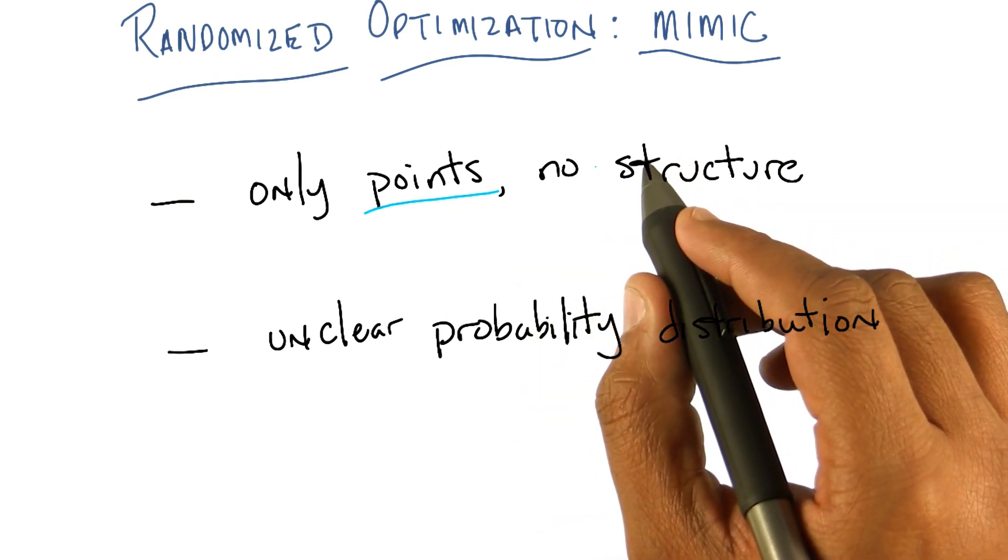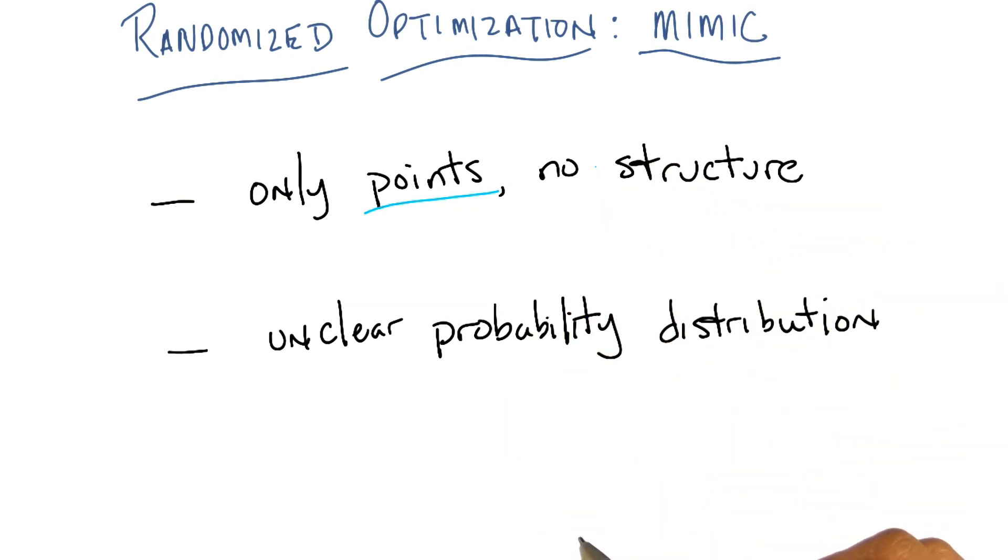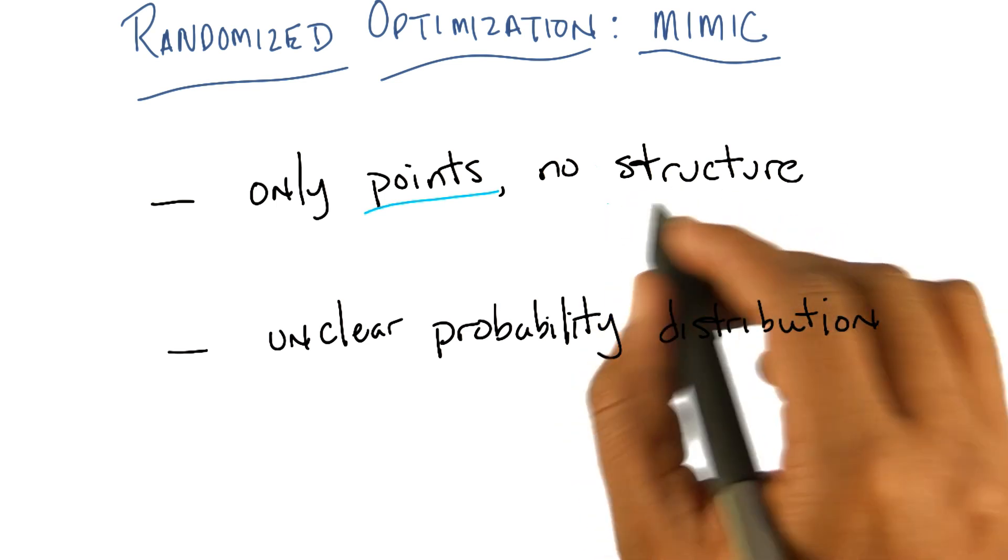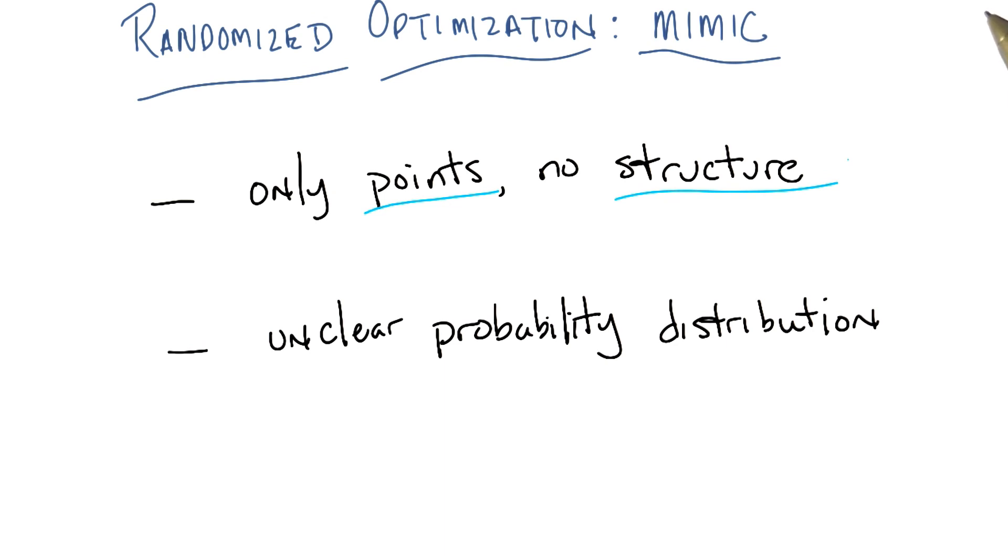And the only difference between the first point and the last point that you did or the one millionth point or however many iterations you had, is that that point might have been closer to the optimum by some measure. And very little structure was actually being kept around or communicated. Only the point was being communicated.